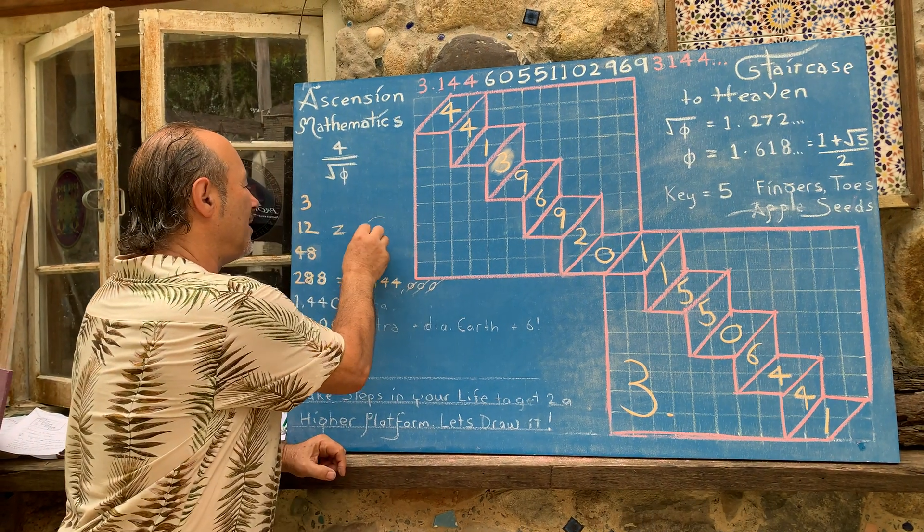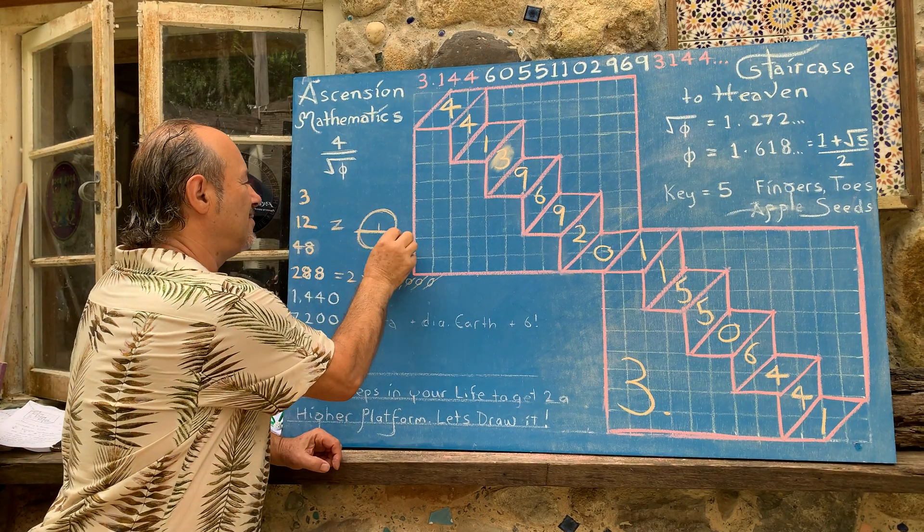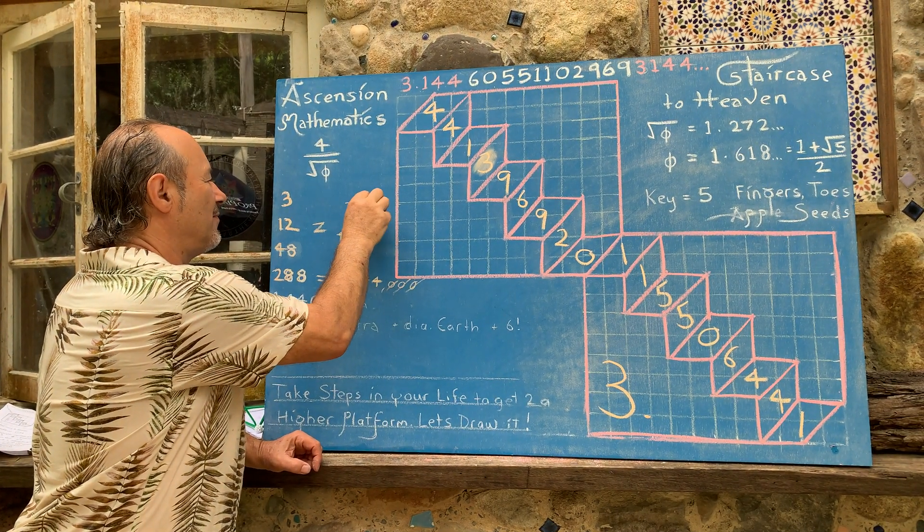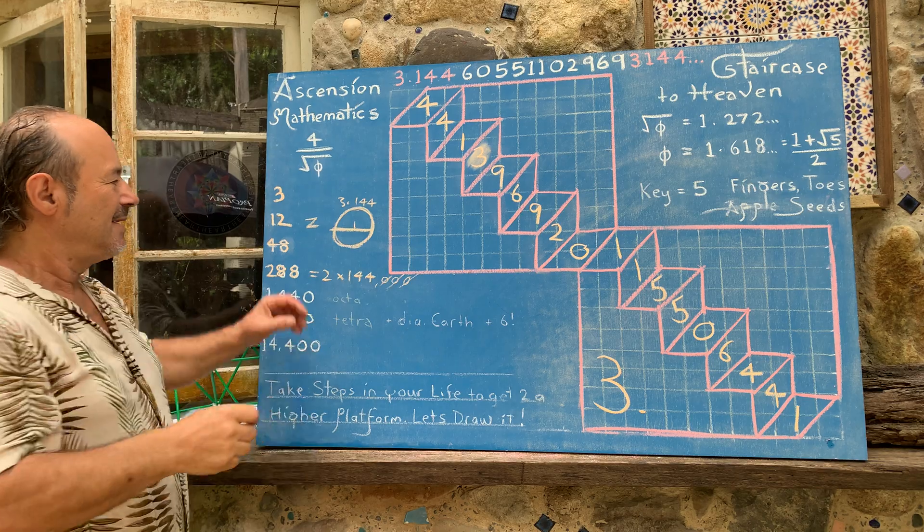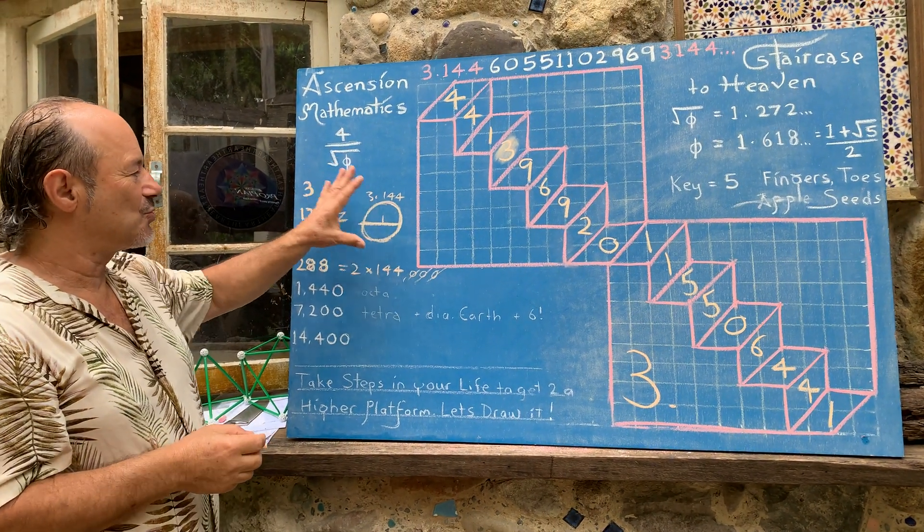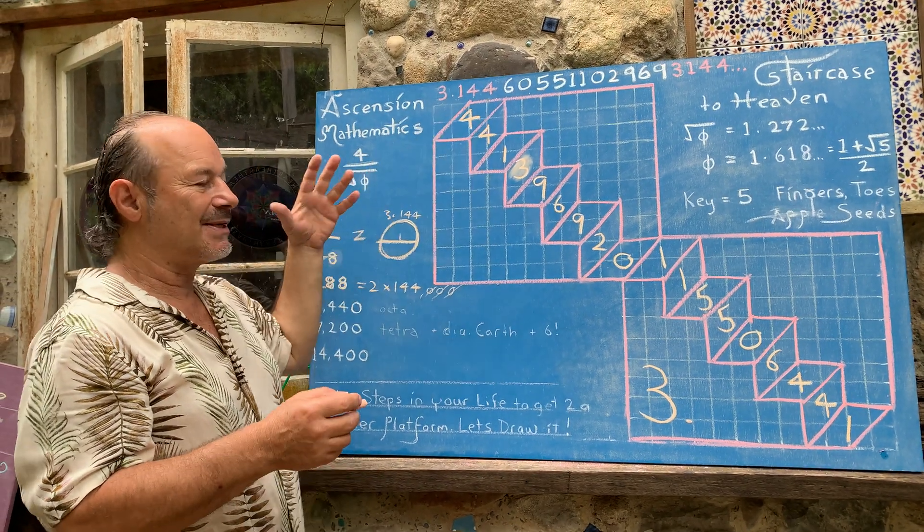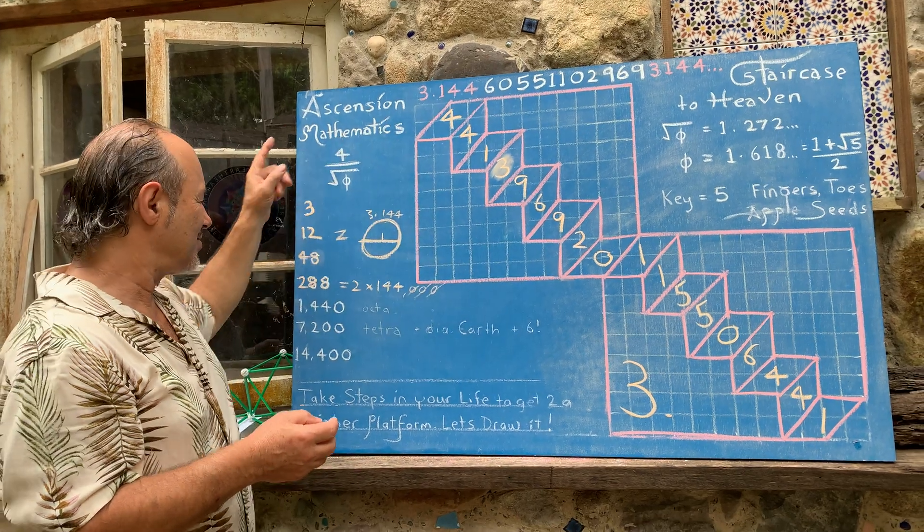So this is ancient knowledge that's embedded within the true value of pi. When we're talking about pi, we're talking about the ratio of the diameter. If that's one, this circle is 3.144. That's the circumference. So this is ancient knowledge that has been distorted and we're correcting it to 3.144 because we understand the mathematics of flowers called the golden ratio.